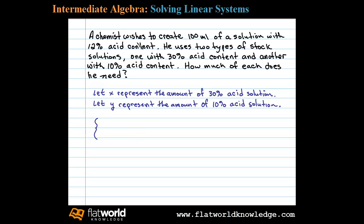The first equation comes from the fact that the chemist wishes to create 100 milliliters total. So the amount of the 30% acid solution plus the amount of the 10% acid solution should add up to 100 milliliters: X + Y = 100. That's our first equation.